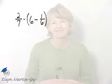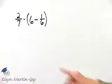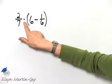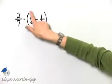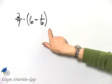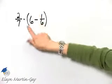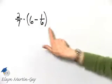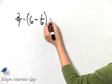So just go slowly, remember those things, and you'll be fine. Let's evaluate this expression. Notice I have multiplication, and then I have subtraction within a set of parentheses, so we will work within the set of parentheses first. That's our set of grouping symbols.